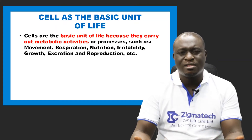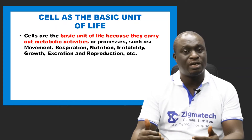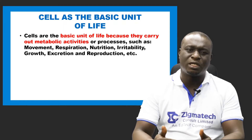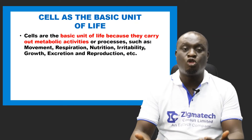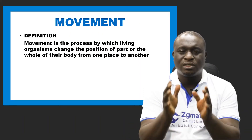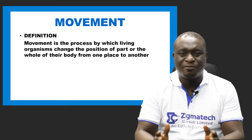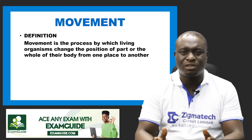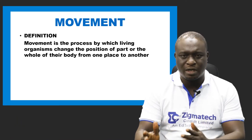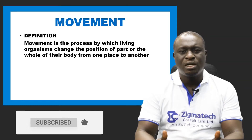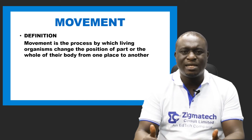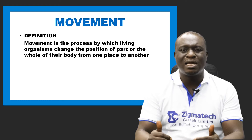So we're going to start with the first one based on the acronym we have, which is Mr. Niger, and that first one is movement. In this particular topic, we're going to be talking about movement and how the cell carries out locomotion. By definition, movement can be defined as the ability of living organisms to change the position of the whole or part of their body from one place to another. As it relates to cellular movement, we will be considering this in terms of locomotion.